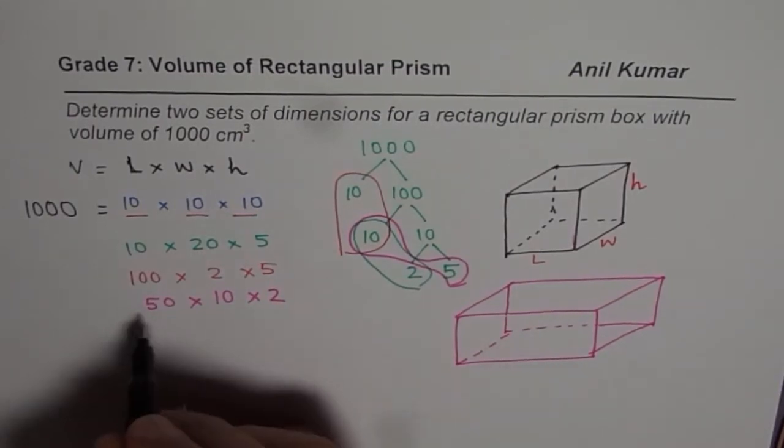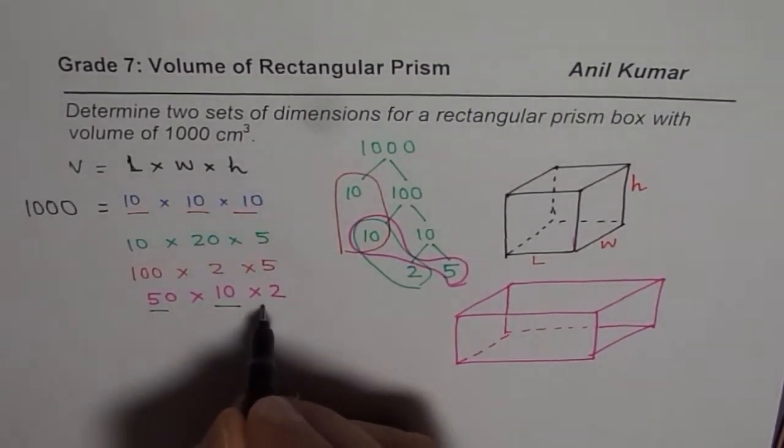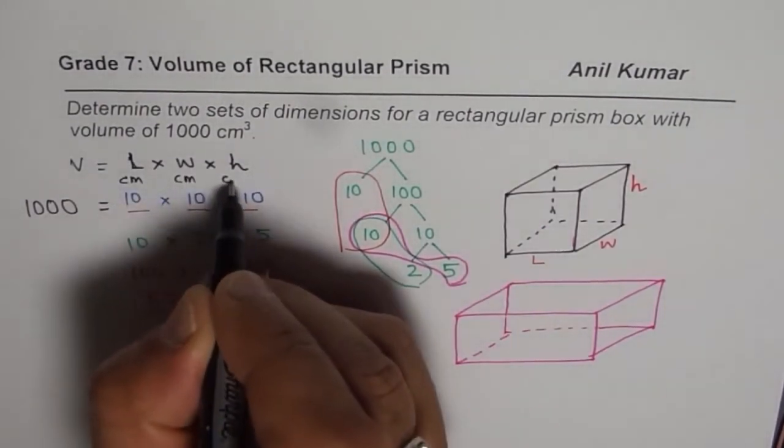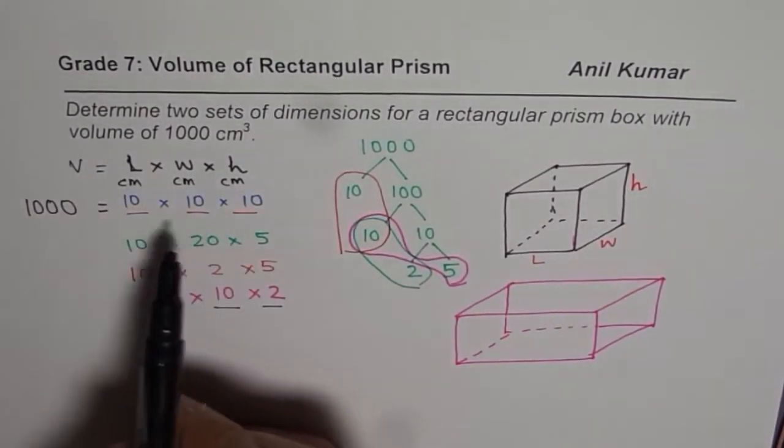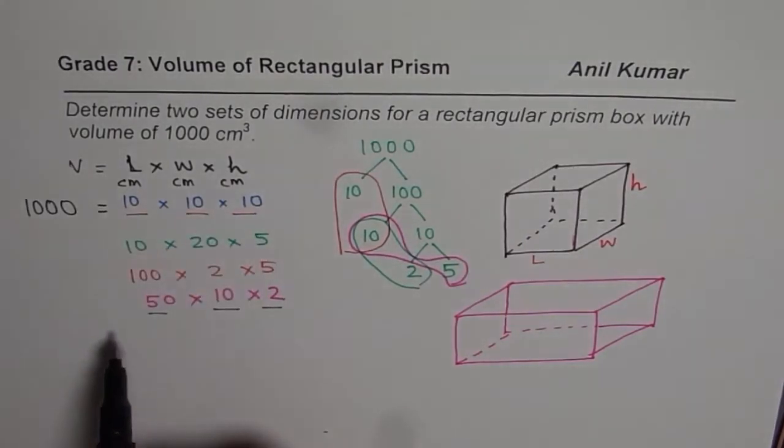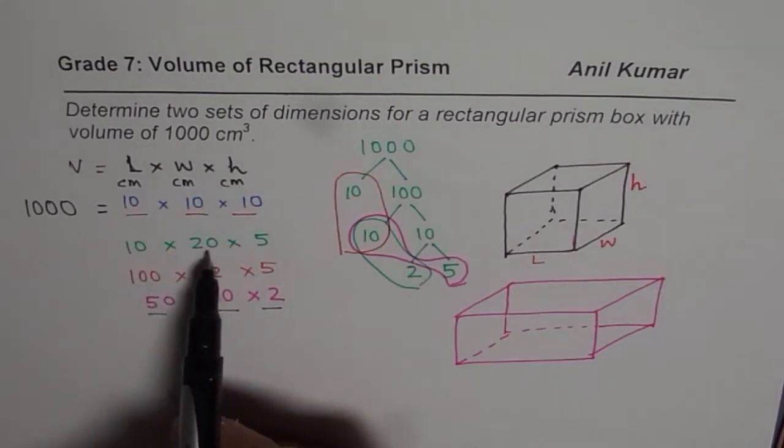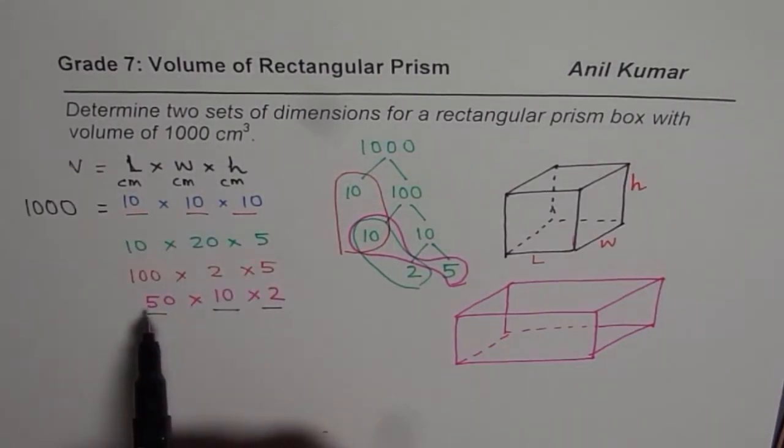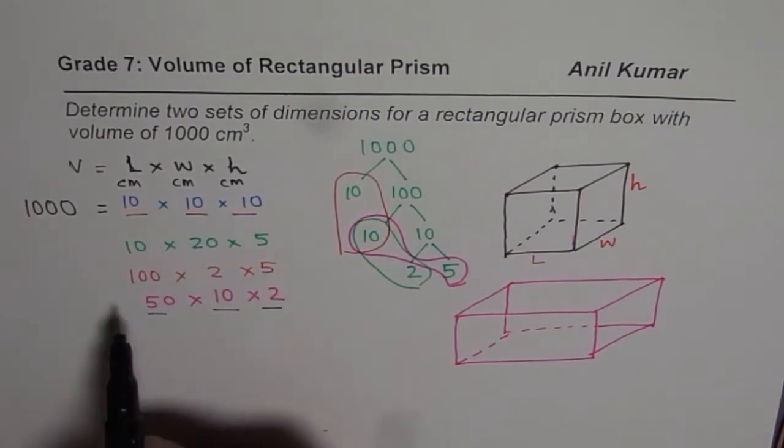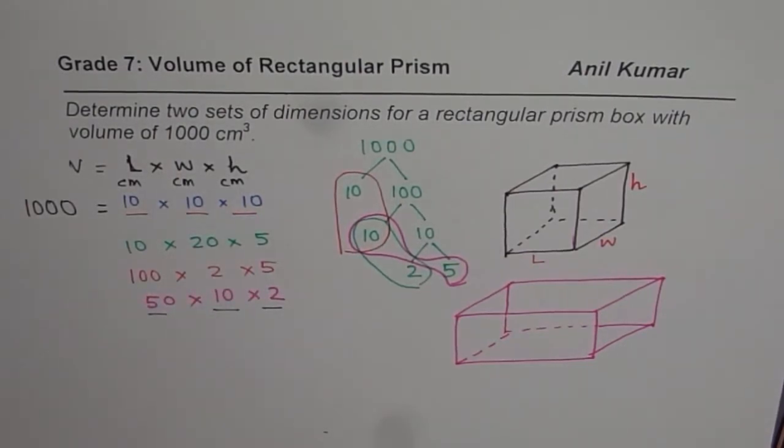So things to do here is, we already answered the question. So the dimensions are, all these dimensions are in centimeters. So the units are centimeters. So you could write that the dimensions could be 10 centimeters by 10 centimeters by 10 centimeters, or 10 centimeters by 20 centimeters by 5 centimeters. You could change the order. 100 times 2 times 5 means 100 centimeter by 2 centimeter by 5 centimeter, or 50 by 10 by 2.